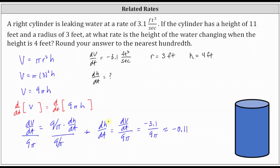This is measuring the change in height with respect to time t in seconds, so the units are feet per second. This tells us when water is leaking from the cylinder at a rate of 3.1 cubic feet per second, at exactly the moment when the height of the water is four feet, the height is changing at a rate of negative 0.11 feet per second — or the height is decreasing at a rate of 0.11 feet per second at this instant. I hope you found this helpful.